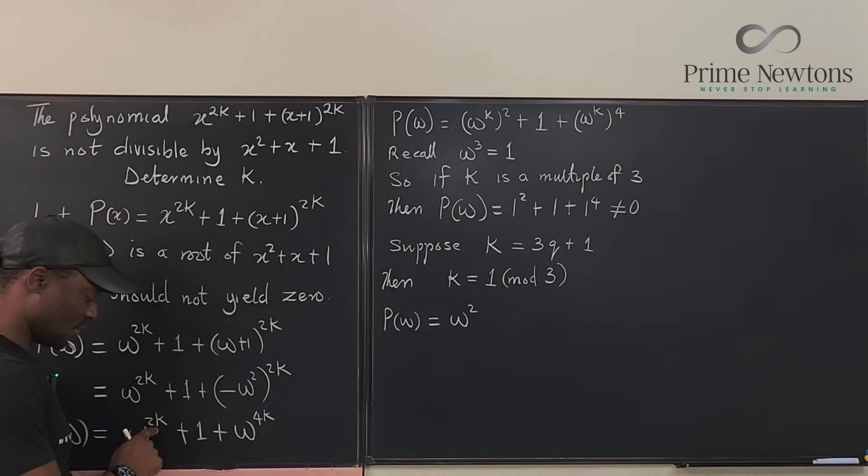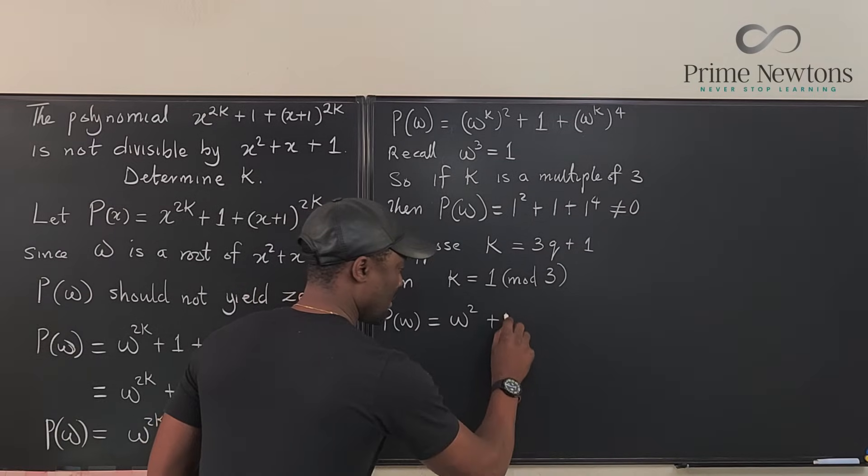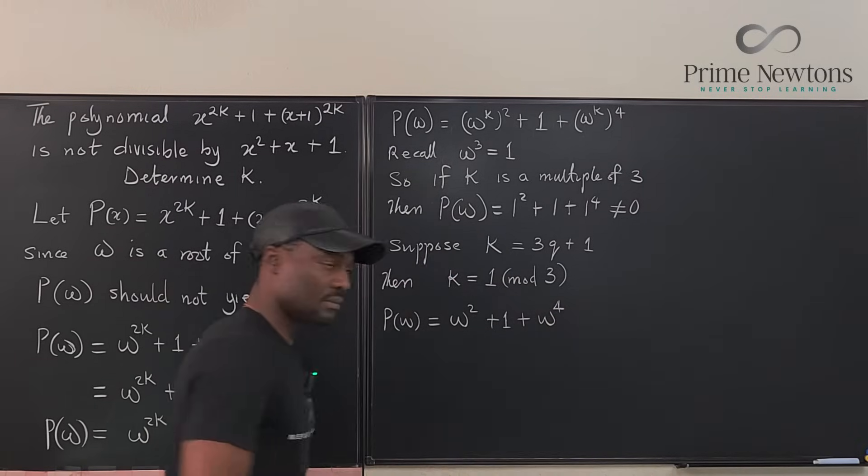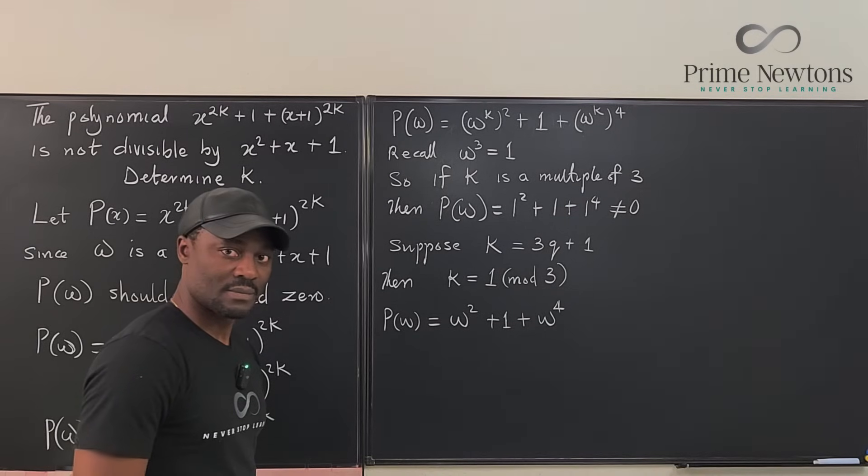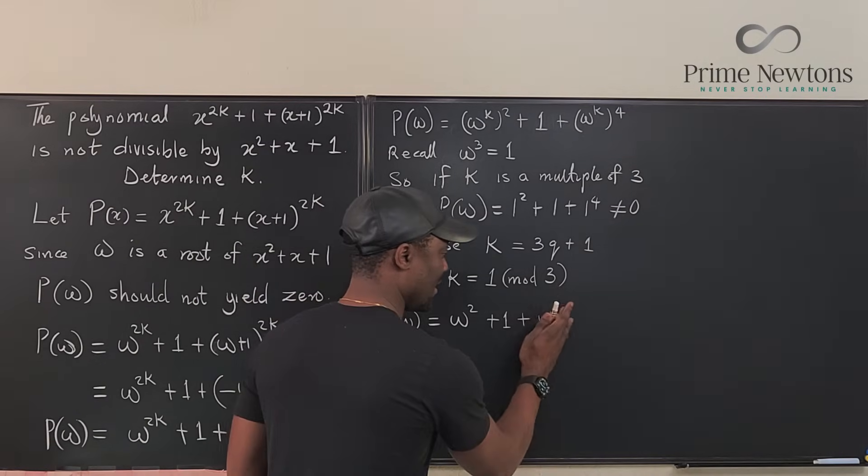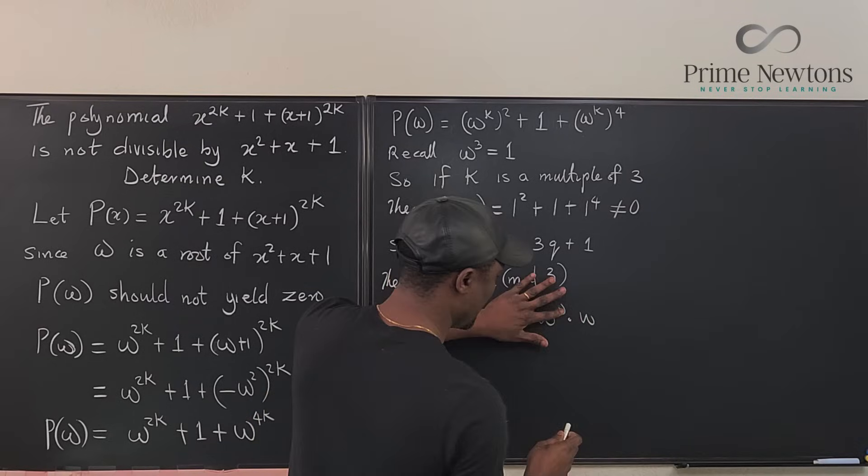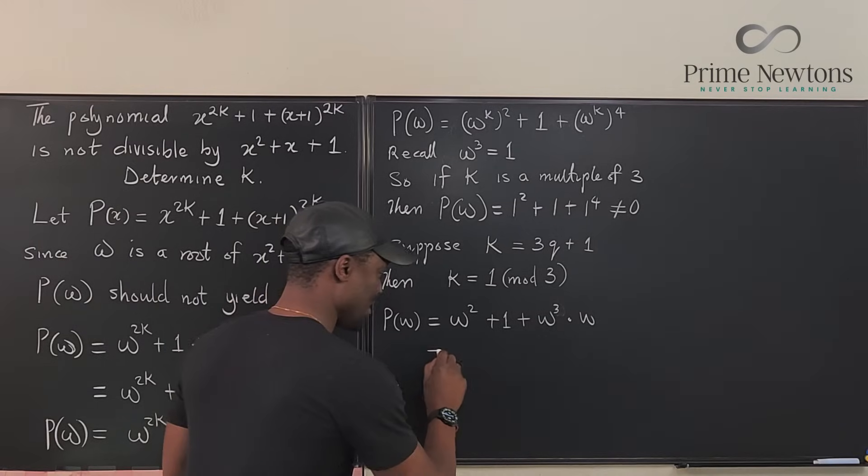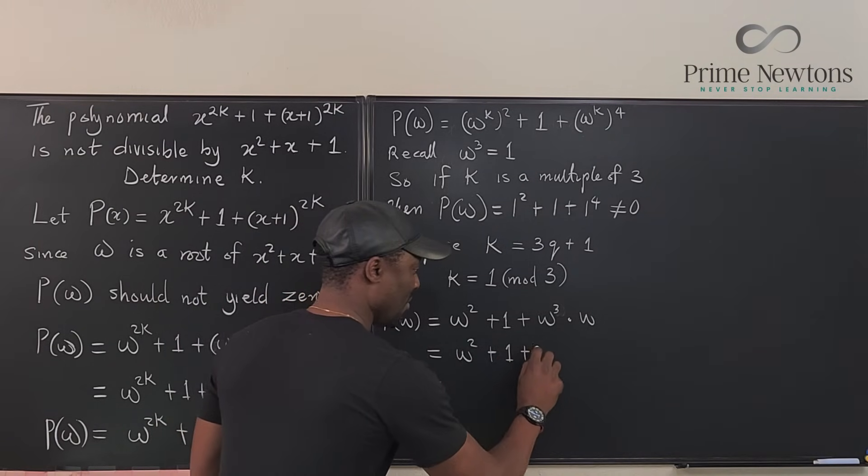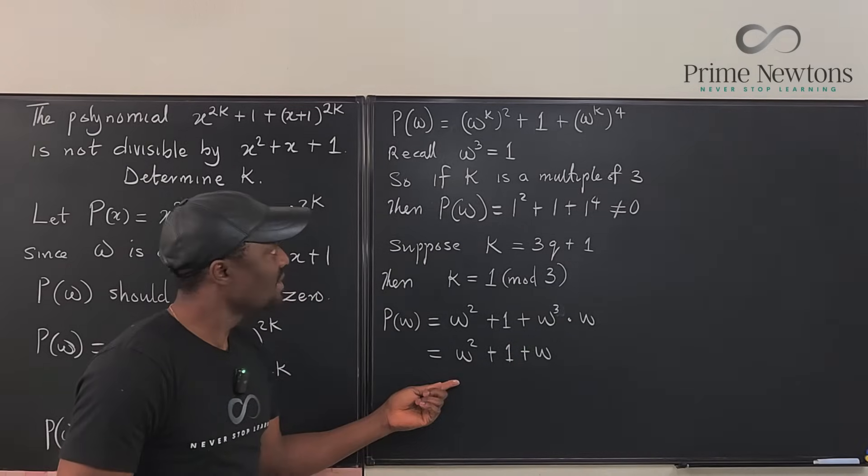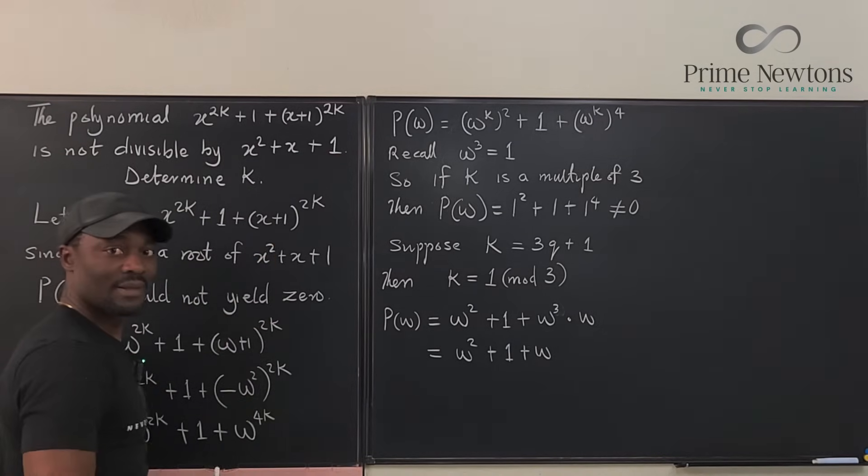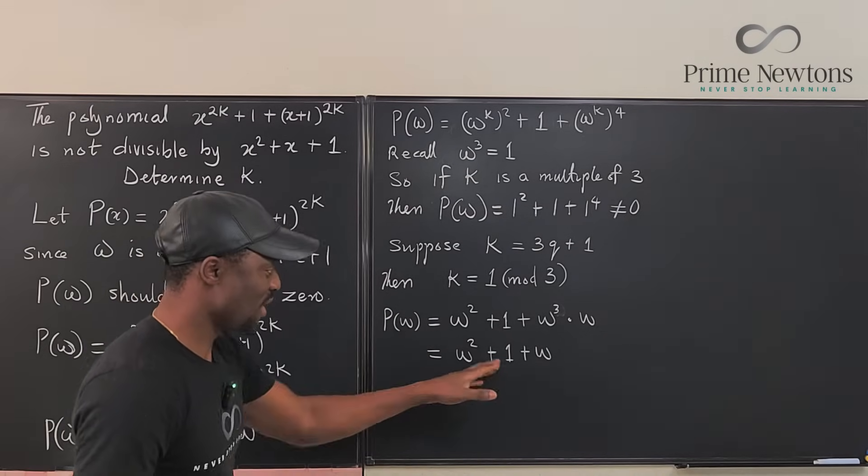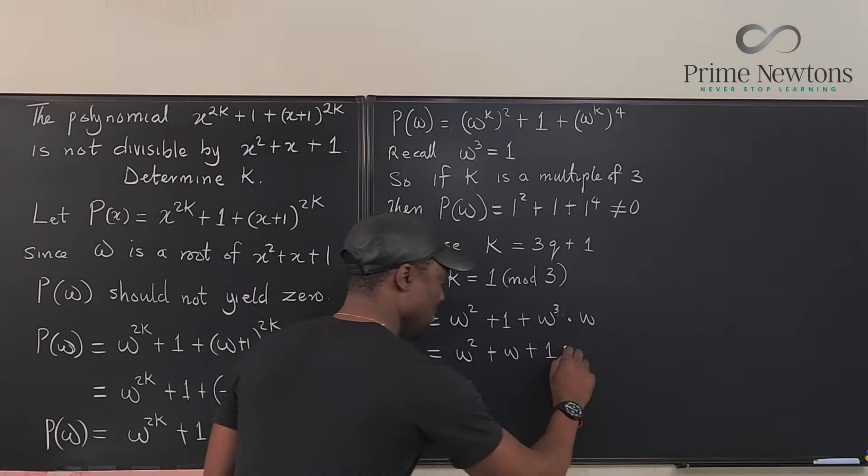So, this is going to be omega to the 2 times 1 plus 1, omega to the 4th. Omega to the 4th is omega cubed times omega. But what did we say omega cubed is? It's 1. So, we end up with omega squared plus 1 plus omega, that's it. But this is this. We just plugged in omega into this and what do we have? This will always be equal to 0.